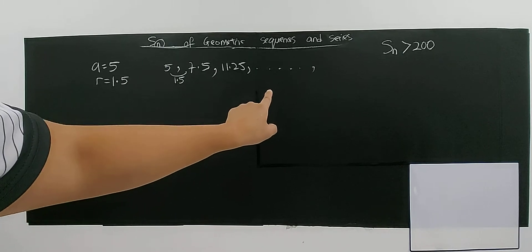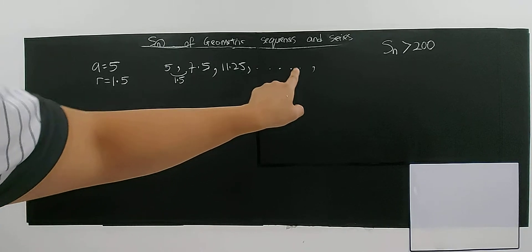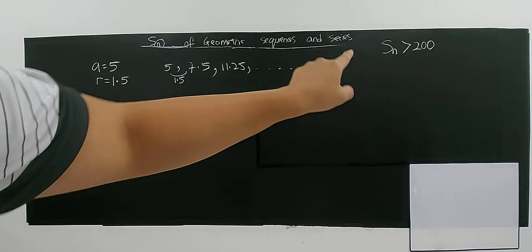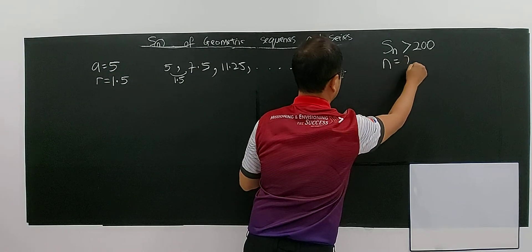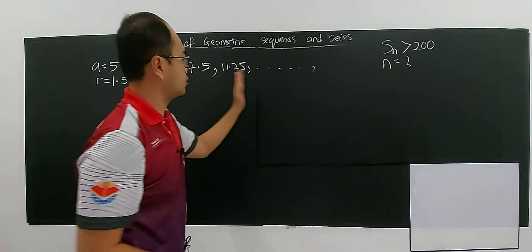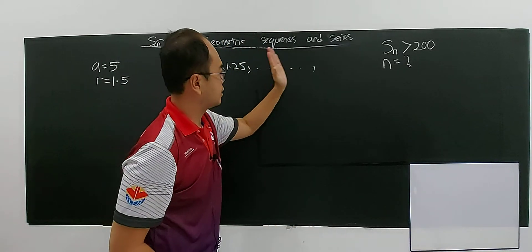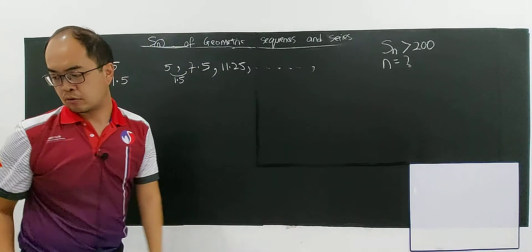Of course if you add up these 3, it's not more than 200. So you have to keep adding until which term. The question here is they want to find the minimum number of terms, so that until when is the first number that more than 200.